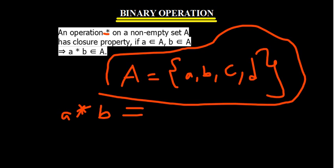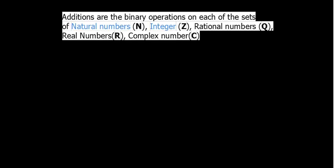A very good example of a binary operation is addition. The asterisk symbol is just denoting different operations on the set — it can be addition, subtraction, multiplication, or other things we are going to see. So addition is a binary operation on each of the sets — that's a very good example.